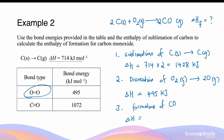Since we're forming two moles of carbon monoxide, the enthalpy change will be negative — because the bond is being formed, we're releasing energy — multiplied by two. This gives us minus 2144 kJ of energy released for two moles of carbon monoxide.